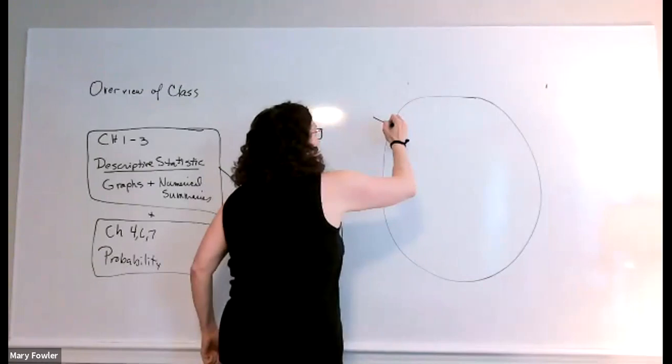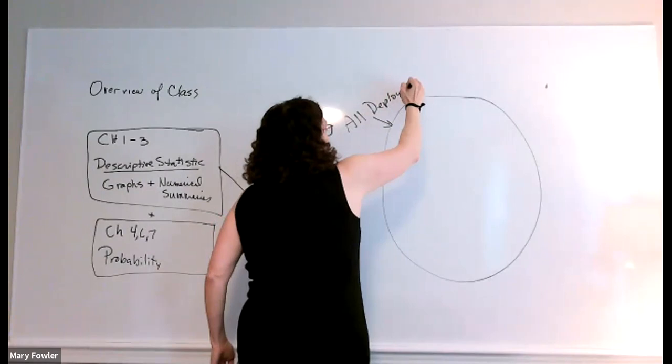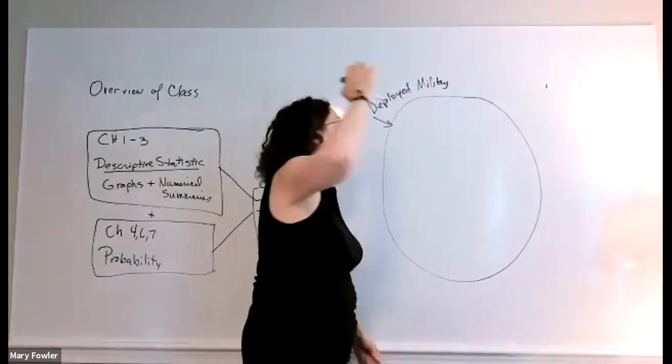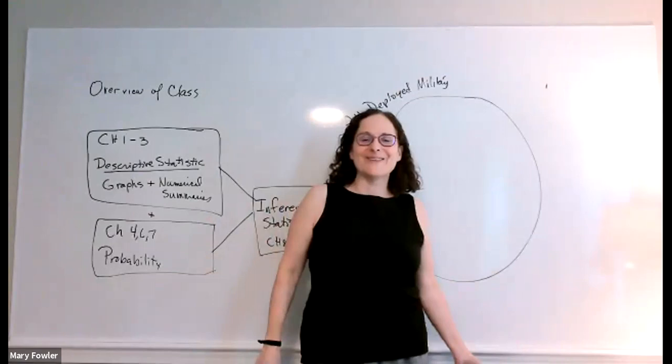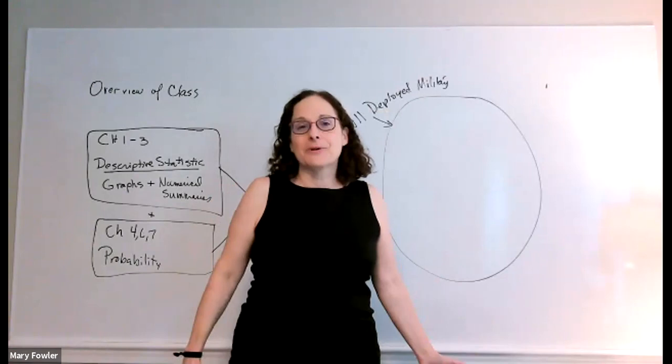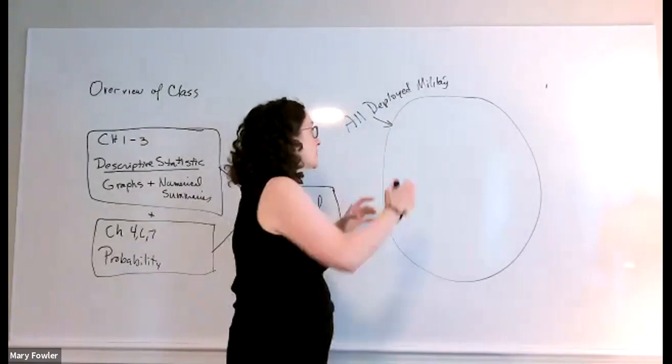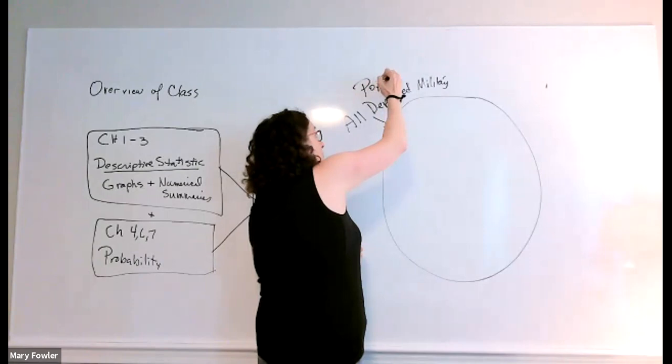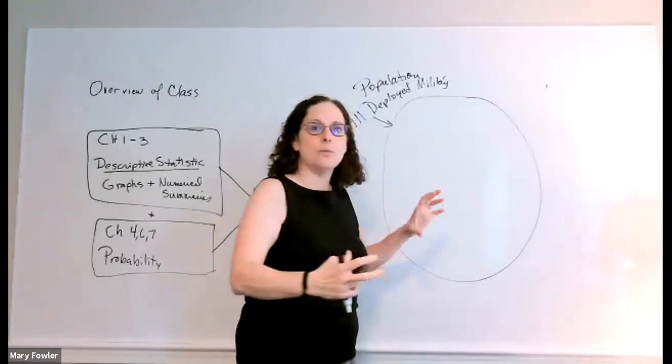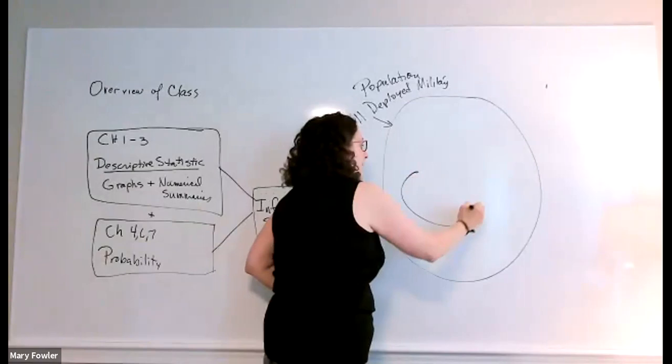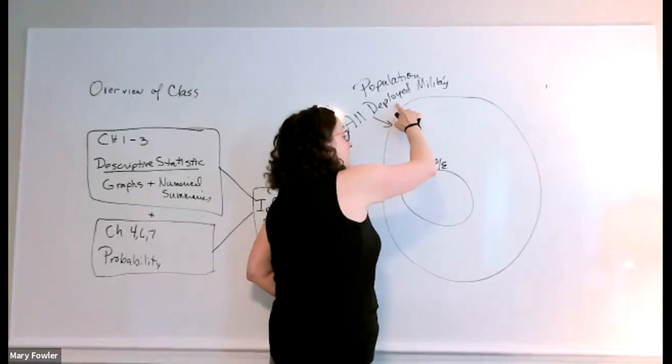We can think about the population as the group of all deployed military individuals. Of course it would have been great if we could do yoga with everyone that was deployed at the time, but we felt quite fortunate that we could have access to 70 deployed military individuals. That whole group of all deployed military individuals we call our population, and then the group that we actually got to do yoga with or measure, we call that a sample.